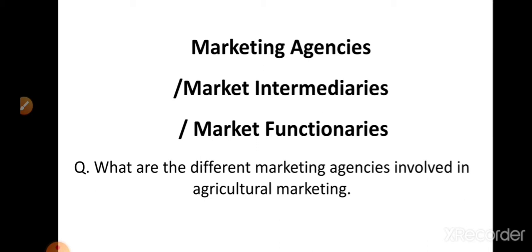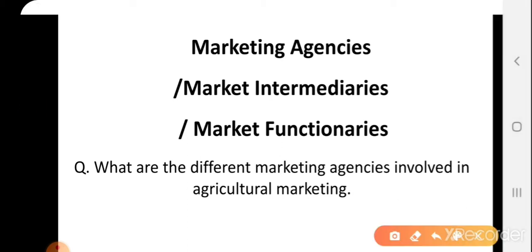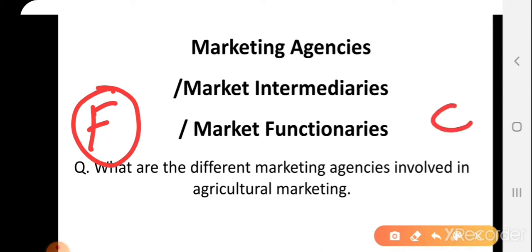Last time, there was a question on this same topic: what are the different marketing agencies involved in agricultural produce marketing? During the movement of products from farmers or producers to final consumers, various marketing activities or functions are involved. For performing these various marketing functions or activities, we have different marketing agencies.